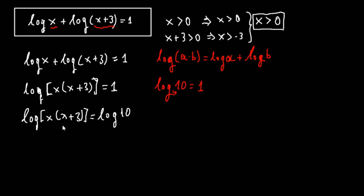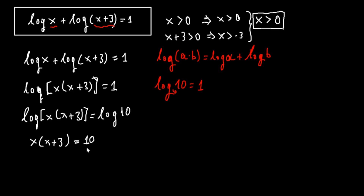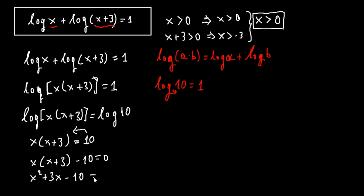Now we have log on this side and log on the other side, and for x being greater than 0 we can write it as x times (x plus 3) equals 10. Moving 10 to this side, we have x times (x plus 3) minus 10 equals 0, or x squared plus 3x minus 10 equals 0. This is a quadratic equation.